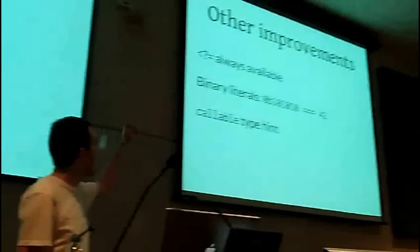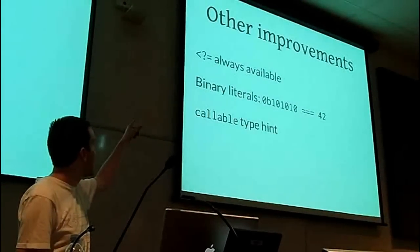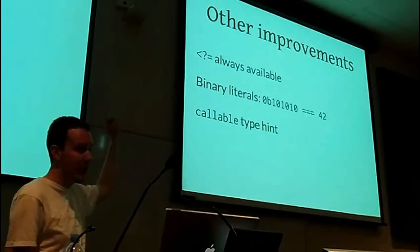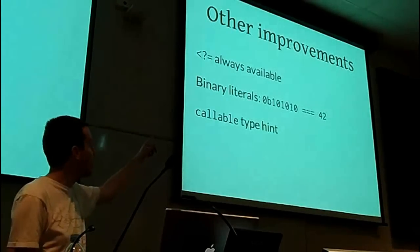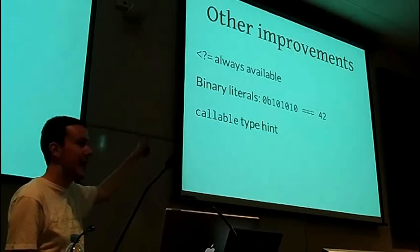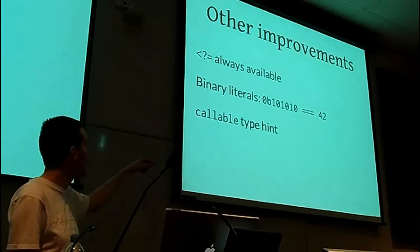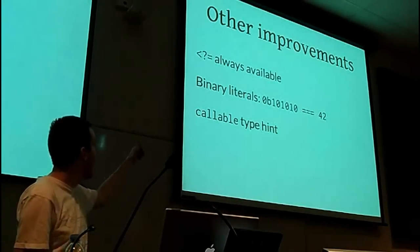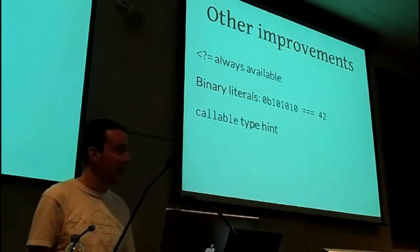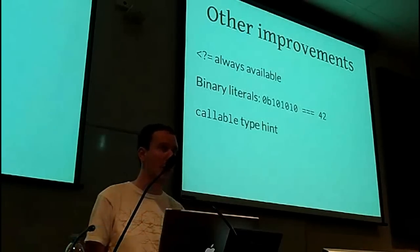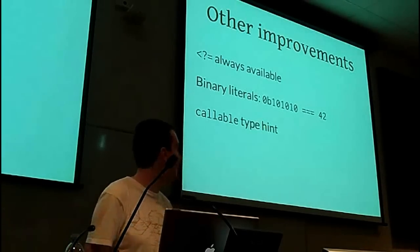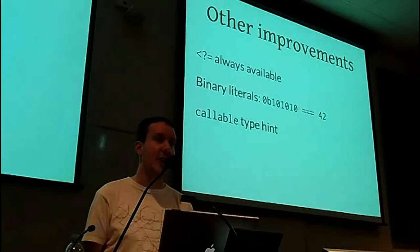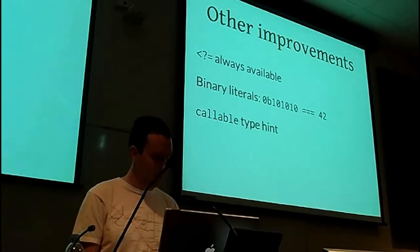Other minor improvements: the short echo tag is always available. There are binary literals to go with hex and octal literals — a bit more useful than octal, at least. And there's a new type hint called callable, which unsurprisingly enforces that your variable is actually callable.